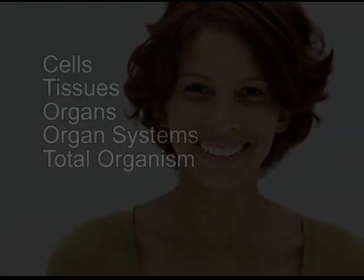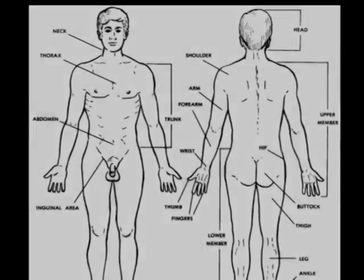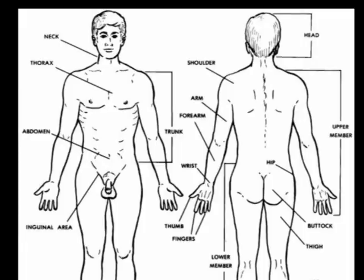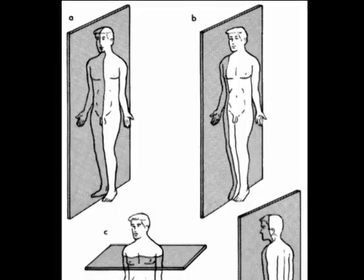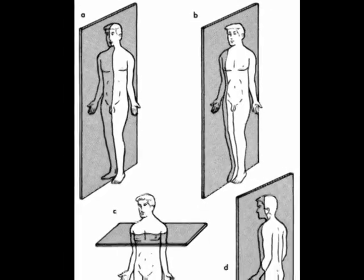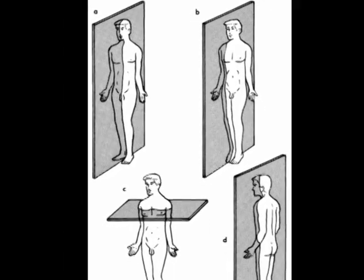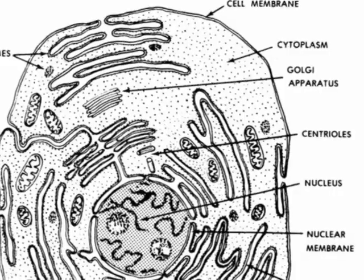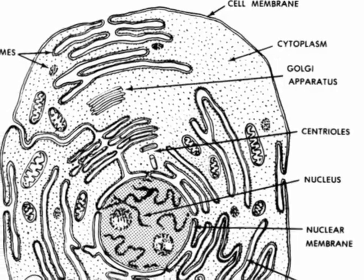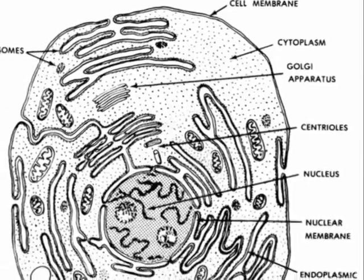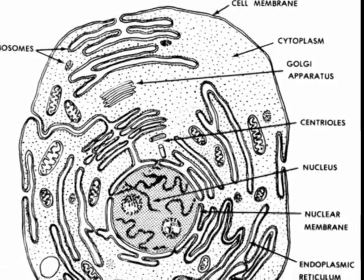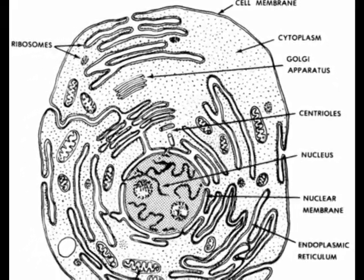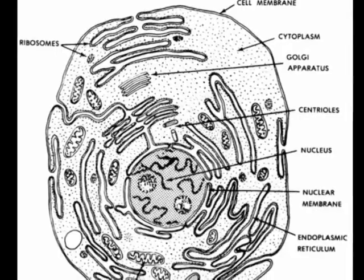You should be able to list the parts of the upper and lower members and name the different anatomical planes and directions. Finally, after studying this material, you should be able to define the cell and match names of major cell components with drawings representing them.